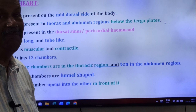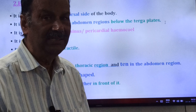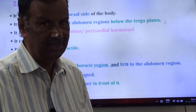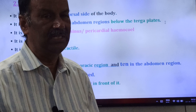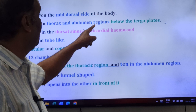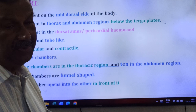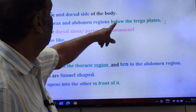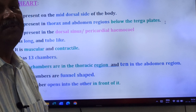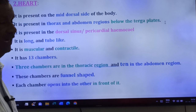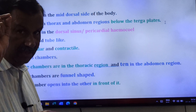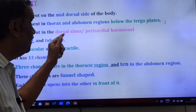The body of cockroach has three parts — head, thorax, and abdomen — made up of 19 segments. Head has 6 segments, thorax has 3 segments, and abdomen has 10 segments. The heart of cockroach is present in the thorax and abdominal regions, below the tergal plates, particularly on the dorsal side. It is present in the dorsal sinus or pericardial hemocele.